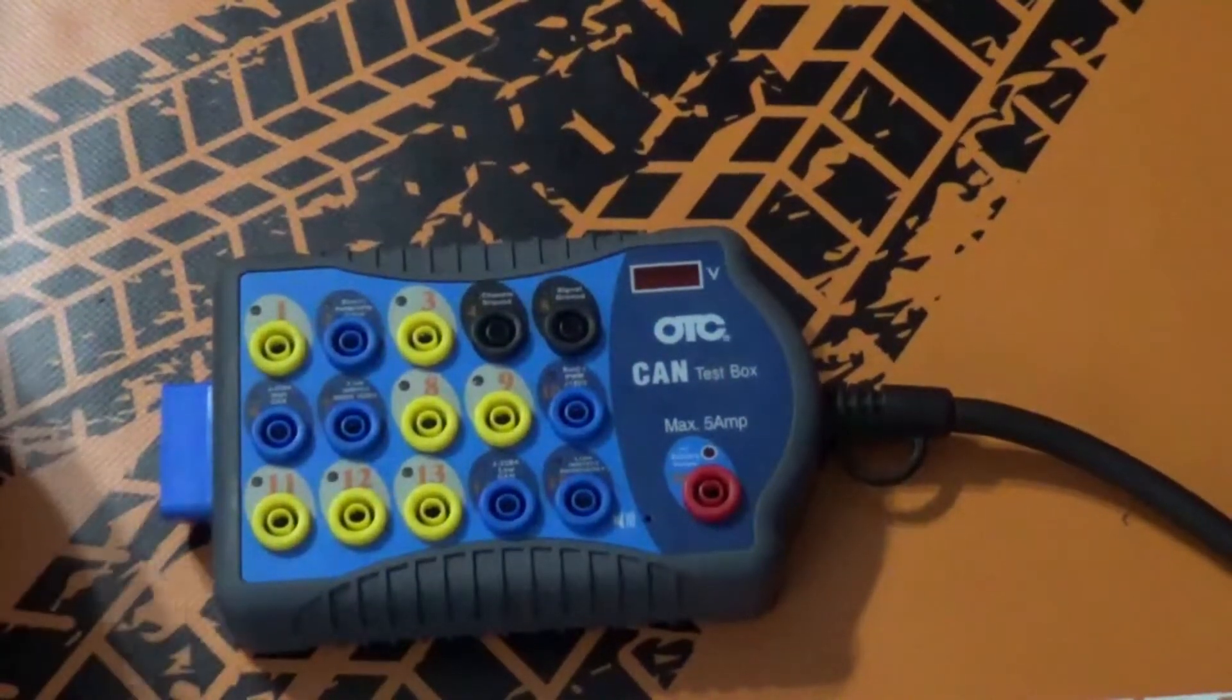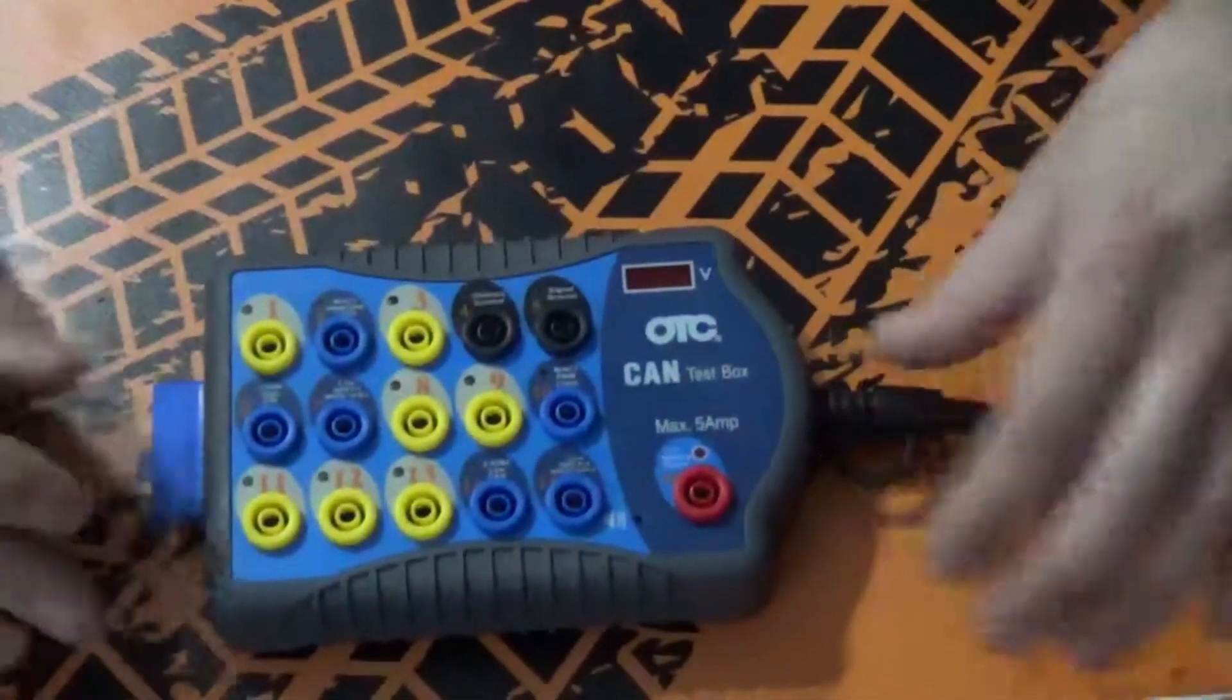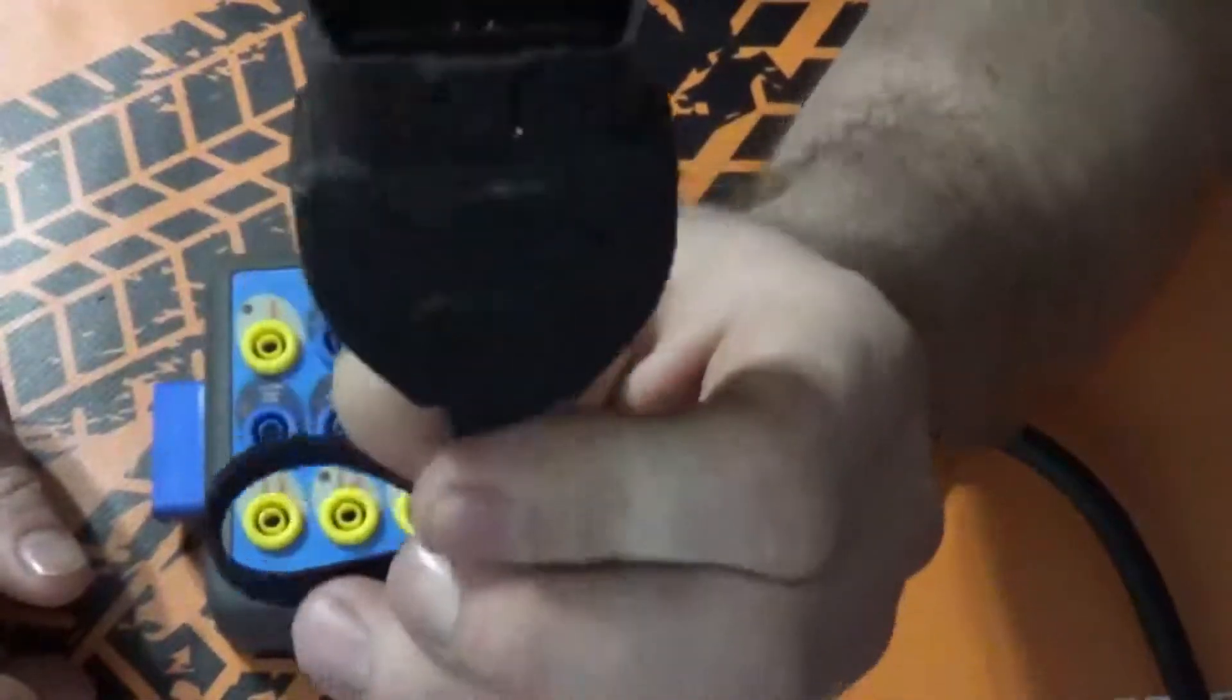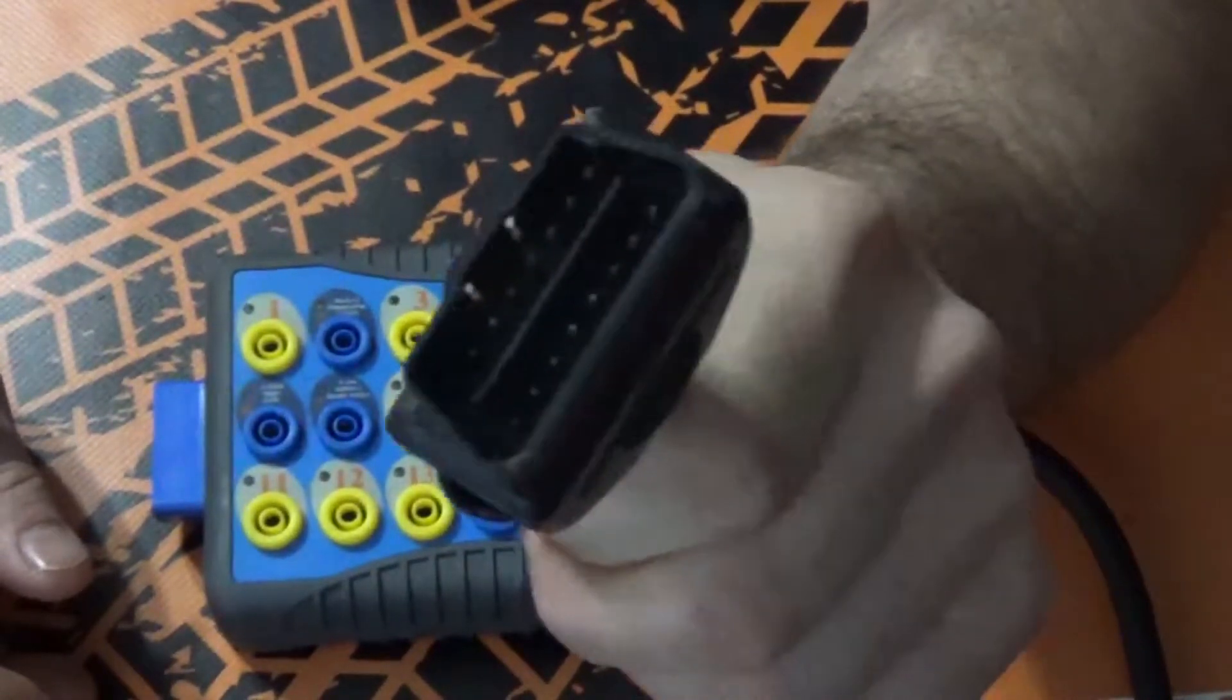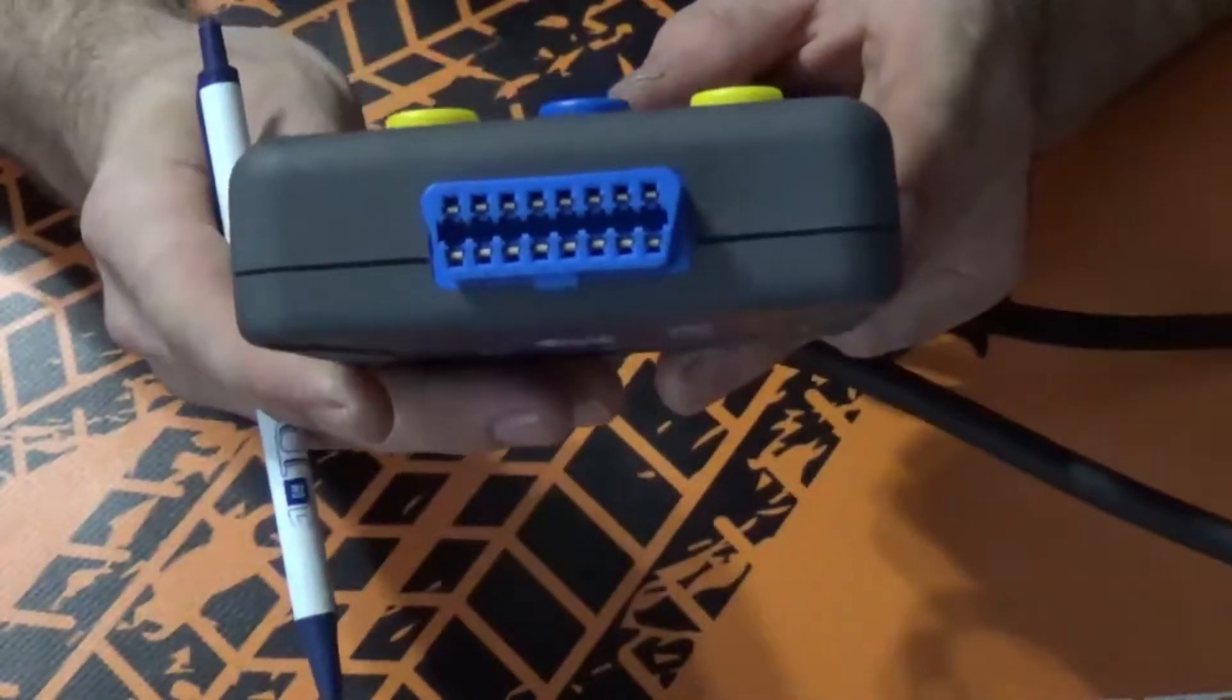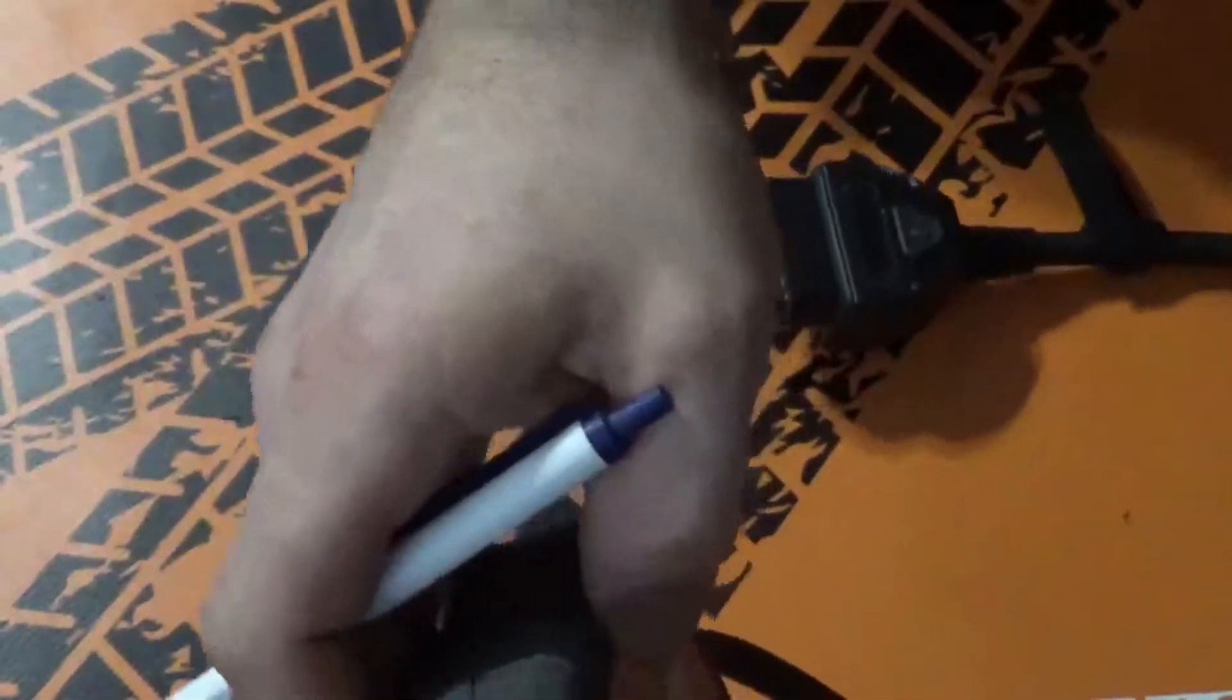So we're going to get started with basically what this guy does. On one end you have a DLC connector. This one's a male and this one will actually plug into your DLC connector that's on the vehicle. And on the other side you have a female connector. This connector right here is going to be actually what your scan tool can plug into, just to give you guys an extension.